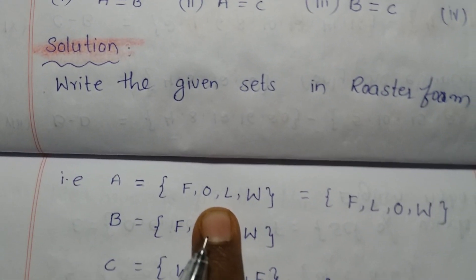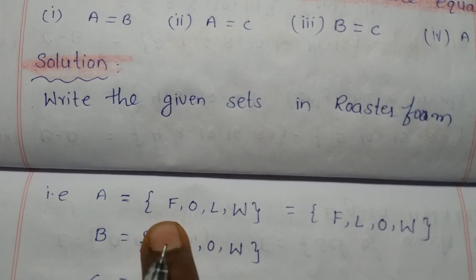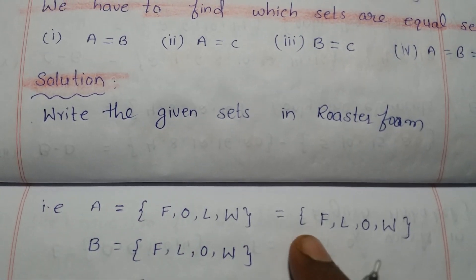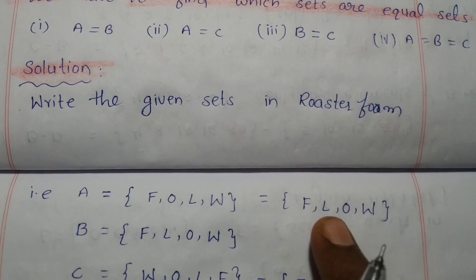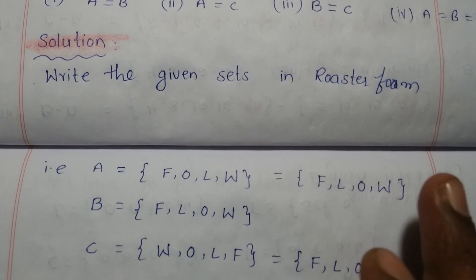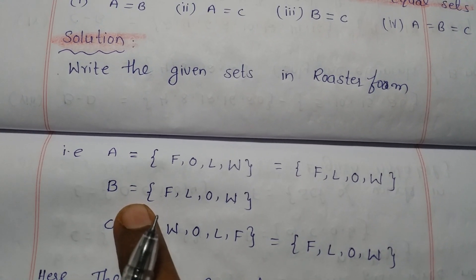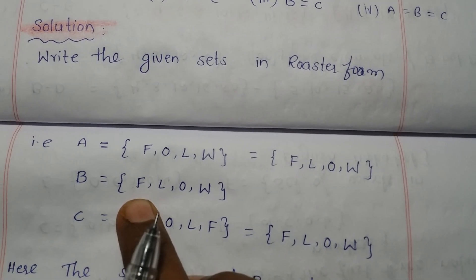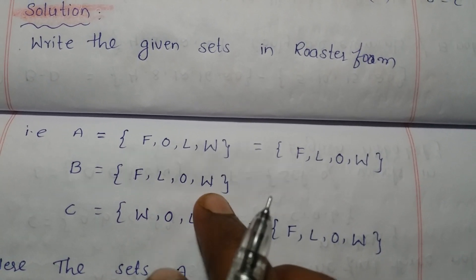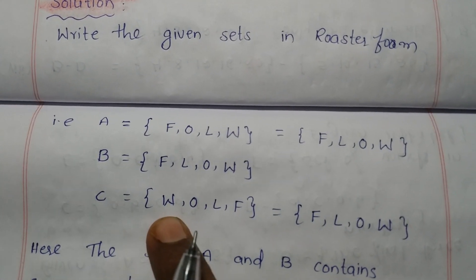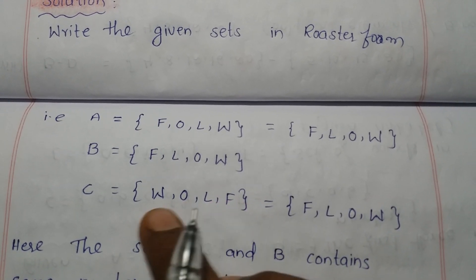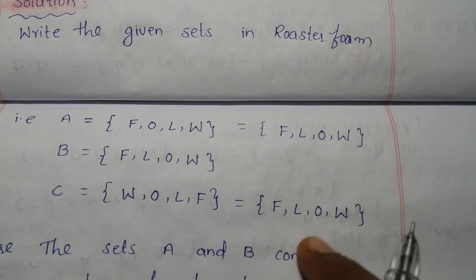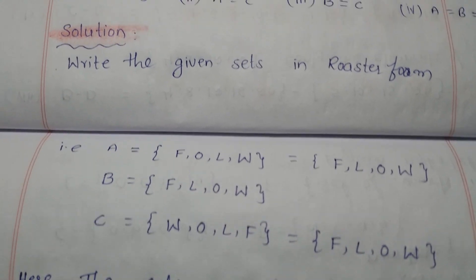Set A (from 'follow') in roster form, rearranging the elements, is F, L, O, W. Set B (from 'flow') in roster form is F, L, O, W. Set C (from 'wolf') in roster form is W, O, L, F — rearranged that is also F, L, O, W. Observing all three sets, A, B, and C contain the same elements.